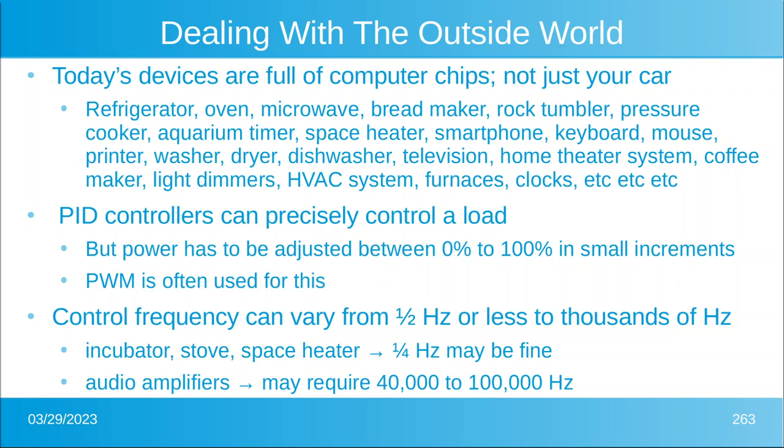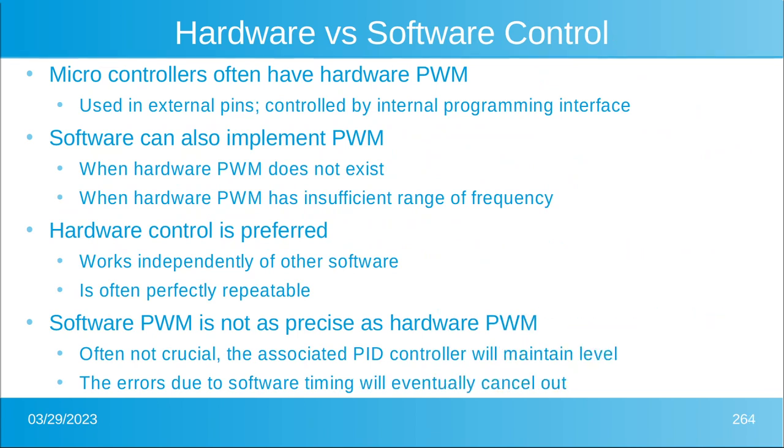In an audio amplifier you might be at a hundred thousand Hertz for your PWM. But for a space heater, an ostrich egg incubator, or a dishwasher, you might use one-fourth of a Hertz or even slower.